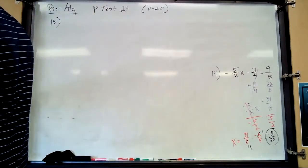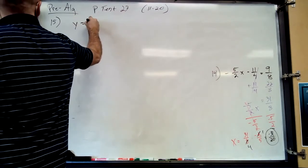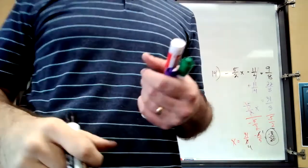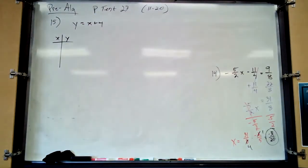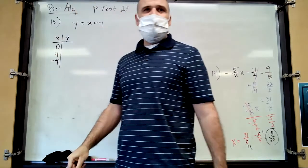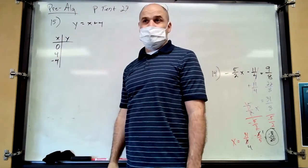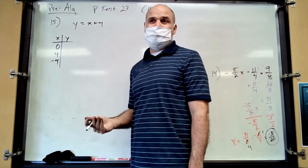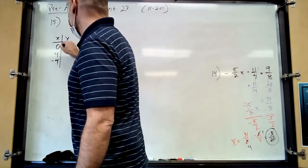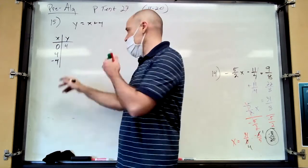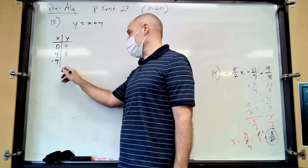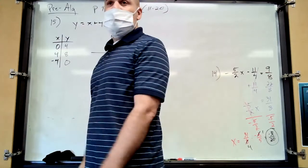Number 15: graph this line. They give us x-values to try: 0, 4, and negative 4. You can choose any x-values you want. When you plug in 0 for x, y equals 4. When you plug in 4 for x, y equals 8. When you plug in negative 4 for x, y equals 0.